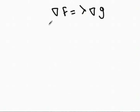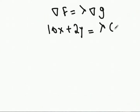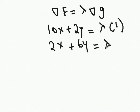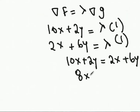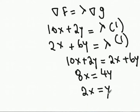Setting the partial with respect to x equal to lambda times the partial of the budget constraint with respect to x gives 10x plus 2y equals lambda times 1. Then setting the partial with respect to y, which is 2x plus 6y, equal to lambda times the partial of the constraint with respect to y. Since both are equal to lambda, I can rearrange to get 10x plus 2y equals 2x plus 6y. Isolating x and y gives 8x equals 4y, which simplifies to 2x equals y.